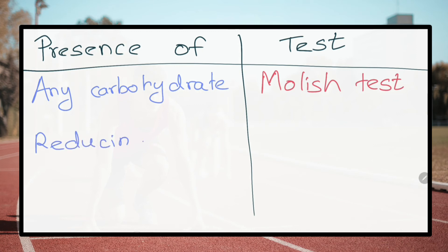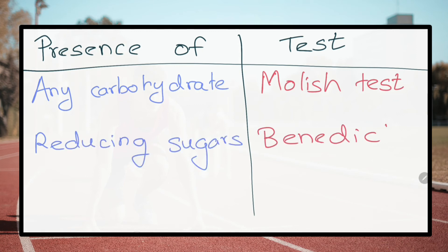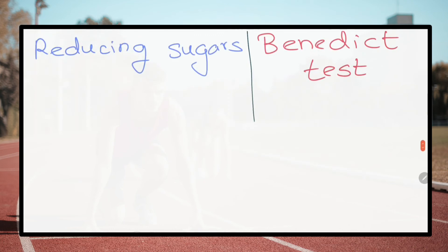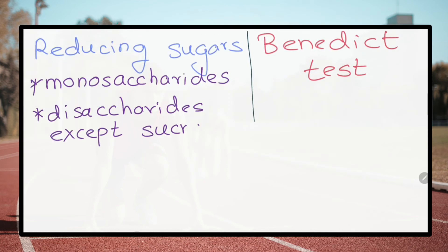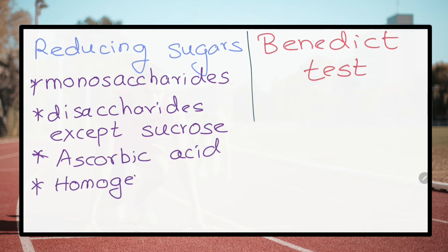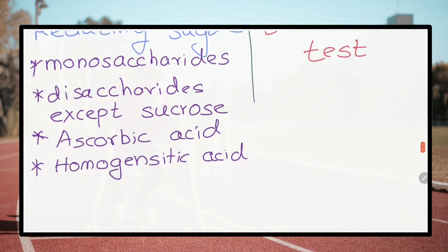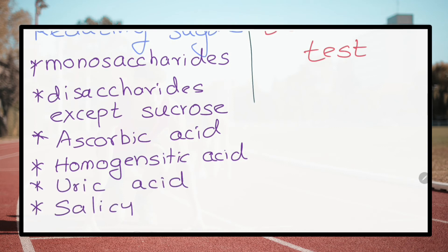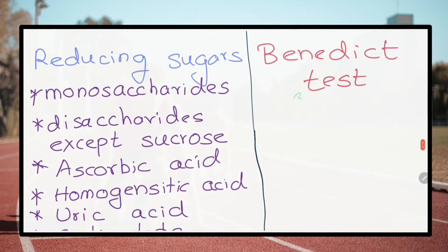What is the Benedict test? It is used to identify reducing sugars. Substances that give a positive result include monosaccharides, disaccharides except sucrose, ascorbic acid, homogentisic acid, uric acid, and salicylate.